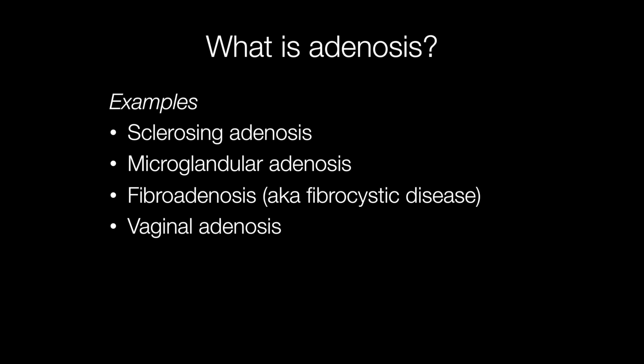Examples of adenosis include sclerosing adenosis, a condition that may be seen in the breast and prostate; microglandular adenosis, a condition seen in the breast; fibroadenosis, also known as fibrocystic disease of the breast; and vaginal adenosis.